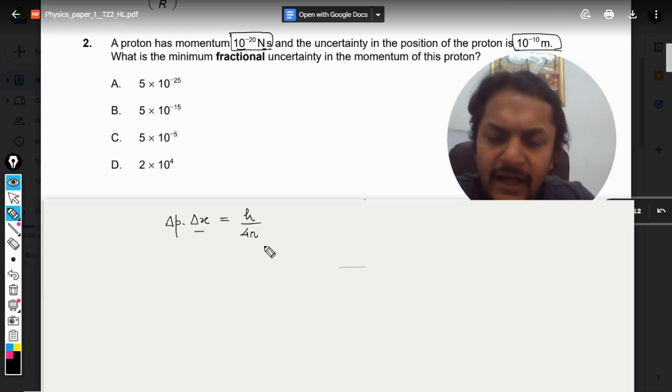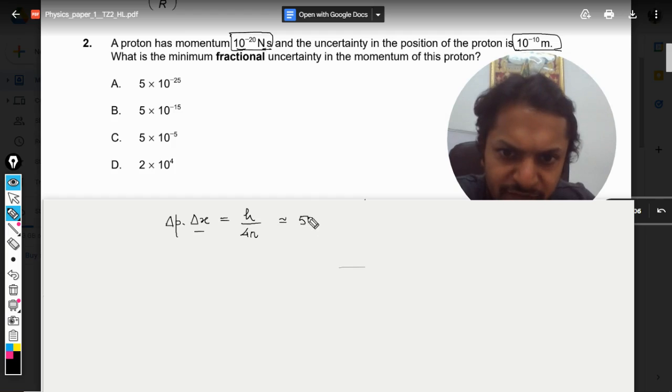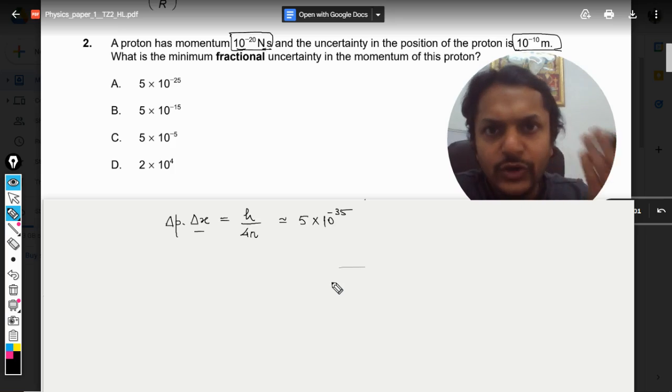So this is given and this I believe is having an approximate value as 5×10^-35. I'm just not calculating it so you can calculate it later, but I believe it is somewhat like this, 5×10^-35.